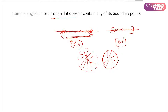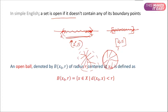For that we should be familiar with the concept of the open ball. The open ball is denoted by B(x₀, r), where x₀ is the center and r is the radius. In two dimensions this will be a circle with center x₀ and radius r. In three dimensions it will be a ball or sphere with x₀ as center and r as radius.